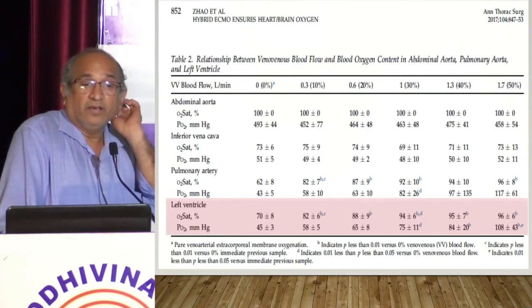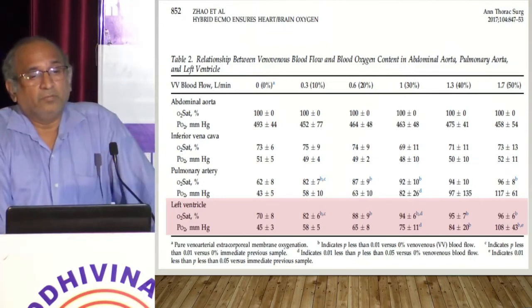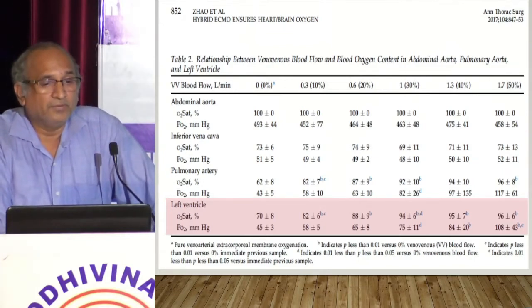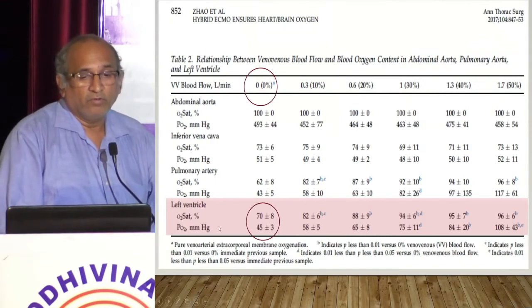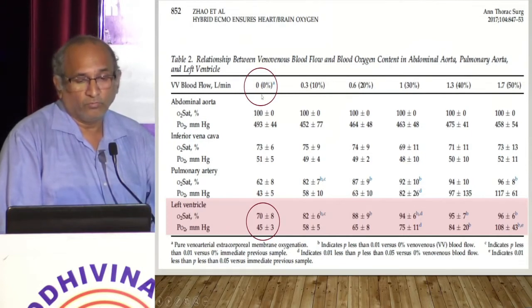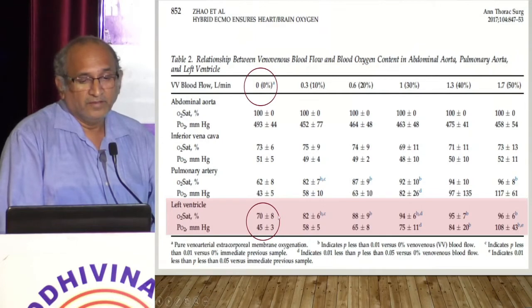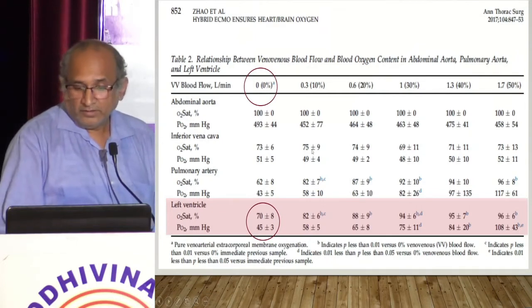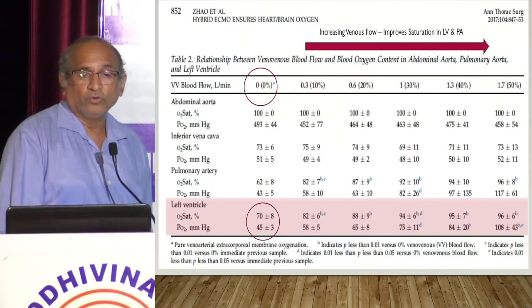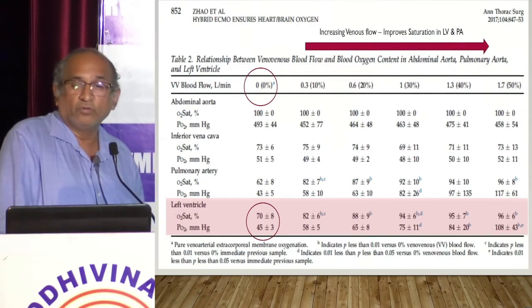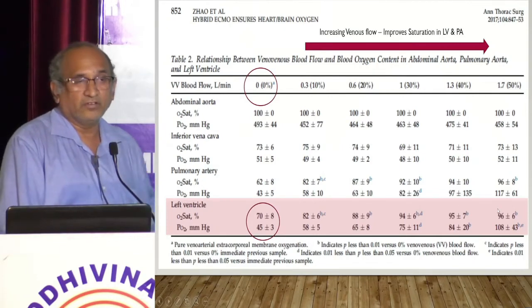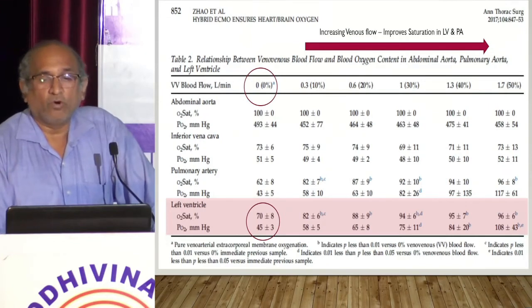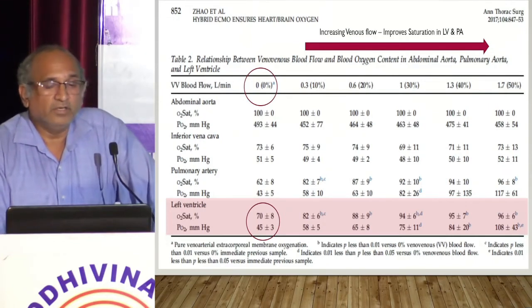There is evidence on how hybrid ECMO helps: when the flow in the VV (venous) part is zero percent, the saturation in the left ventricle is around 70 percent. When you increase the flow support on the VV part and decrease the flow on the VA part, the saturation in the left ventricle increases — from 70 percent up to 96 percent. This is how VA-V ECMO helps: more flow on the venous part definitely improves saturation.